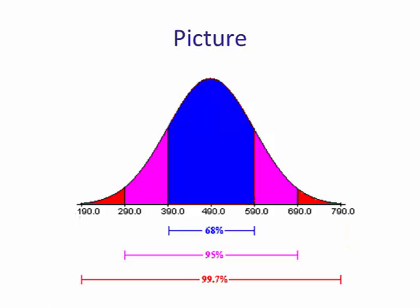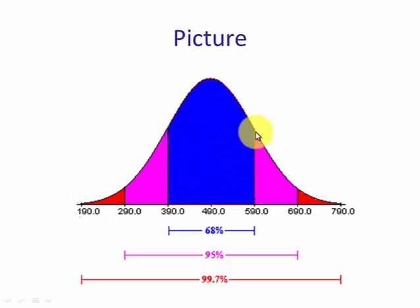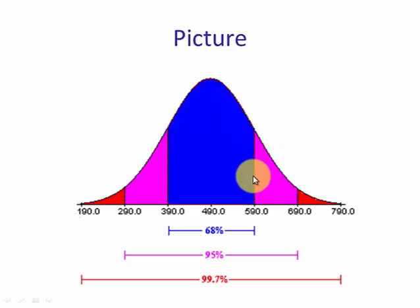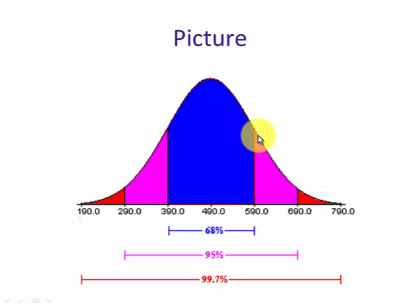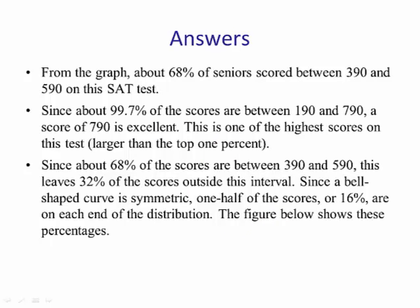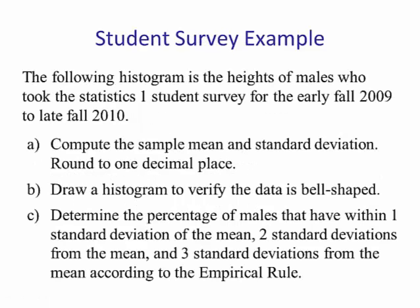For the last question, we want to find the score that is in the top 16%. We know the middle section — within one standard deviation — is 68%. That means the two tails together are 100% minus 68%, which is 32%. Since the distribution is symmetric, each tail is 32% divided by 2, which is 16%. So a student would need to score 590 or higher to be in the top 16%.